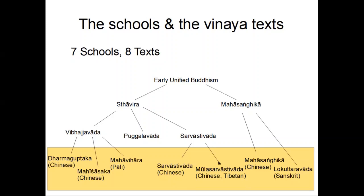Then we have two more distantly related schools: the Sarvastivada with a Chinese text and the Mula Sarvastivada with both Chinese and Tibetan texts. The Mula Sarvastivada still survives and is practiced by Tibetan monks, though Bhikkhuni ordination was never introduced in Tibet. There are efforts underway to introduce it, but it's very difficult. Very distantly related are the Mahasanghika with a Chinese version and the Lokuttaravada with a Sanskrit version — these split in the first split.